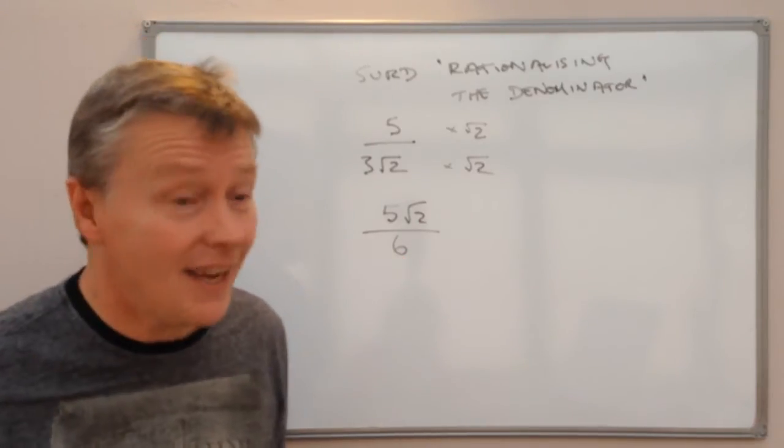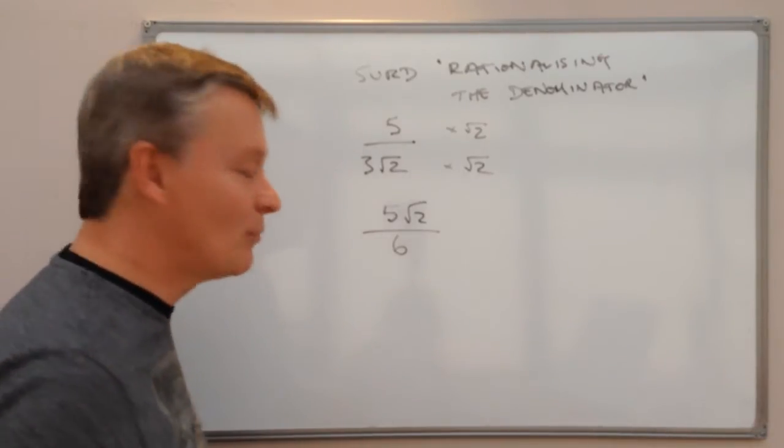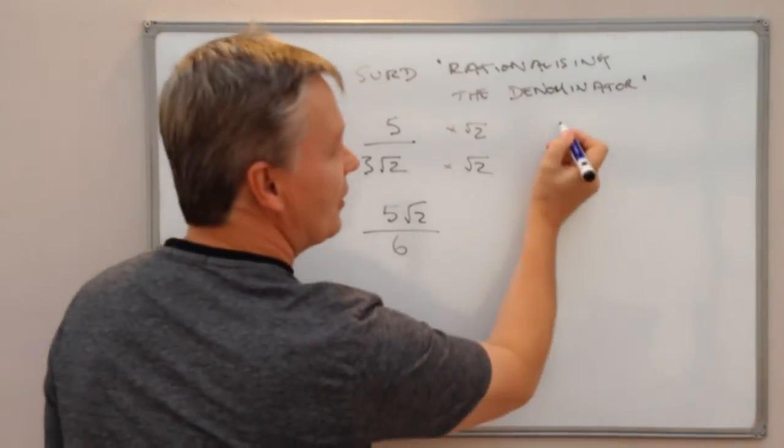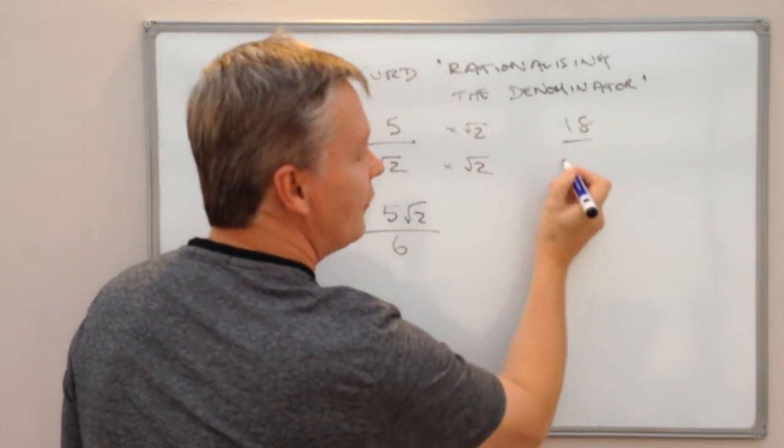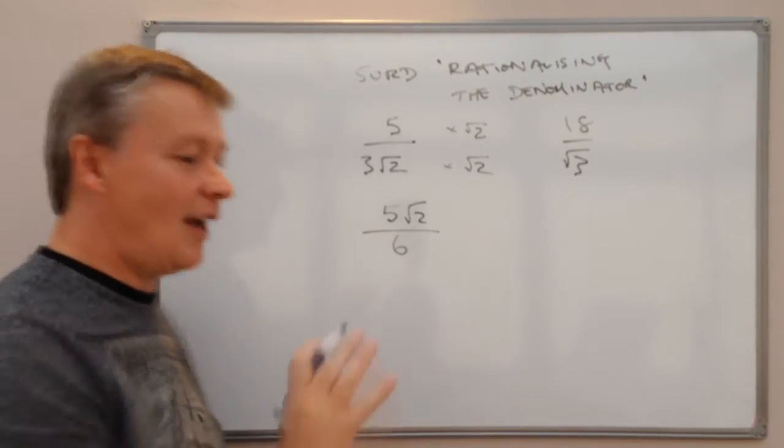Pretty much that's it as far as rationalising the denominator is concerned. So let's just give you one more example of this where again I'm going to have a very similar sort of question and it says 18 over root 3 and what we need to do is rationalise that denominator.